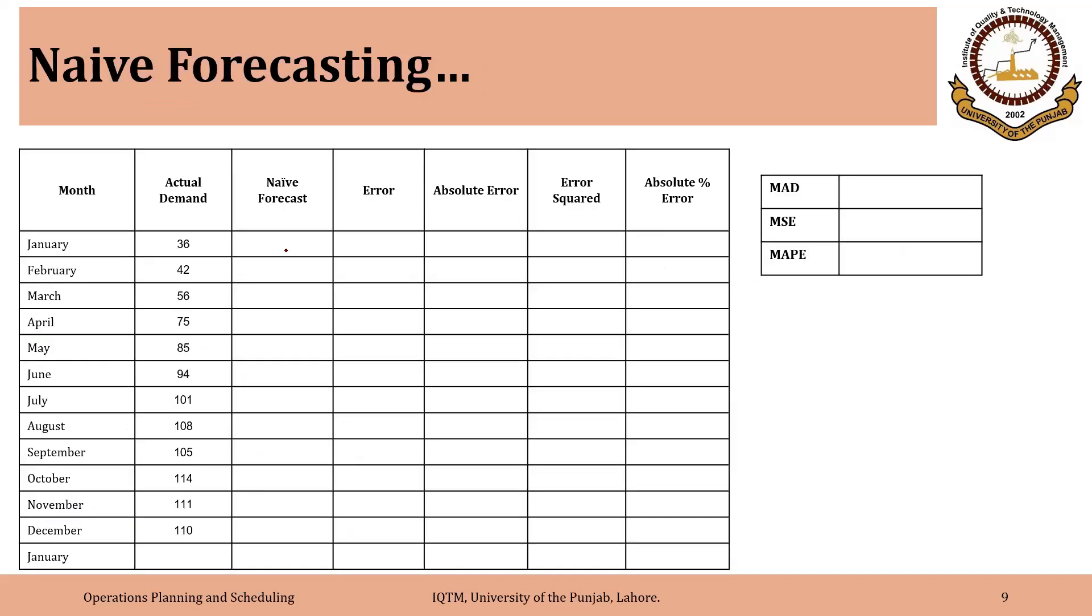So in this case, in the dataset that you have, we have the demand for 12 months. And if you make forecasts, that will be simply equal to the actual demand for the previous period. For example, the forecast for February will be equal to actual demand for January, that is 36. The forecast for March will be equal to actual demand for February, that is 42. For April it will be 56 and so on. And similarly, you can calculate the forecast error as actual demand minus forecast and absolute error, error squared and absolute percent error and eventually calculate these three measures of forecast error. But we will be making these calculations using Excel.